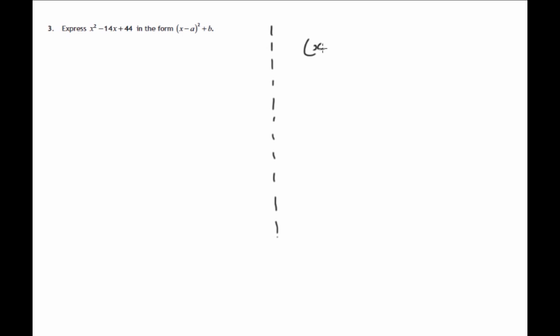The special form we're asked to write it in has two brackets that are identical. x minus a times x minus a plus a number.